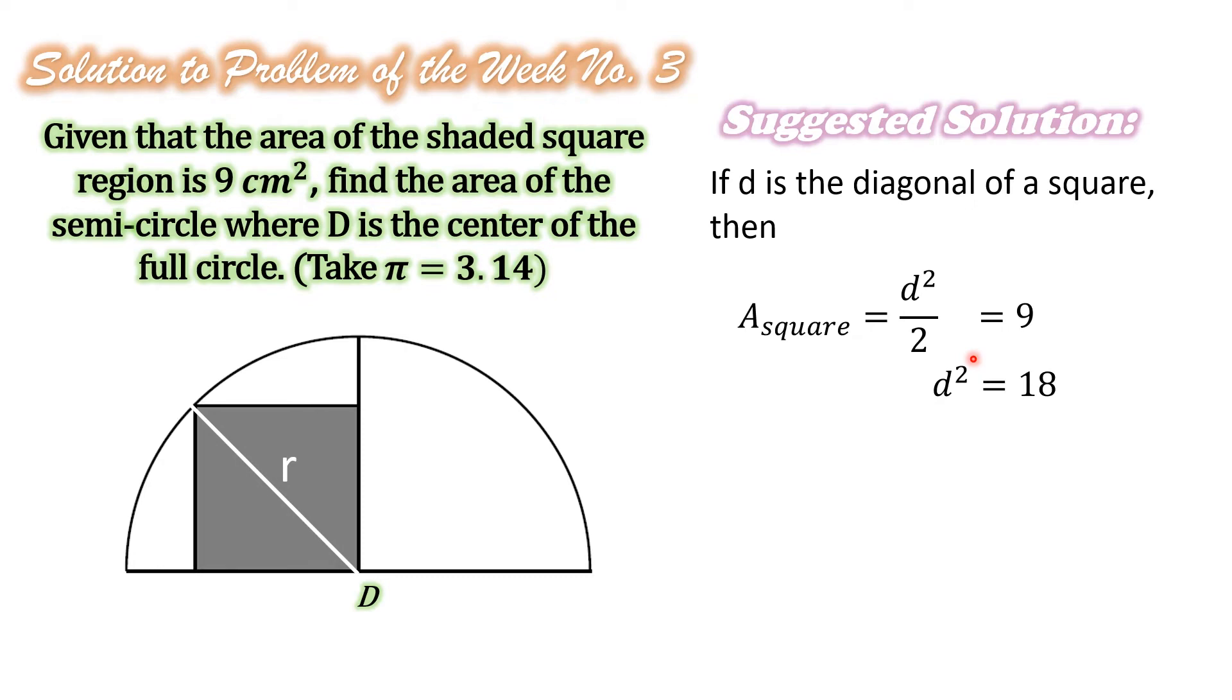And in our problem, since the radius of the semicircle is the same as the diagonal of the square, R is equal to D, then R squared is also equal to 18.